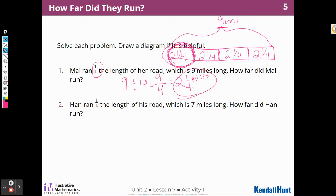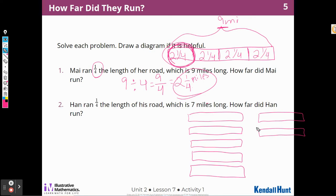Now we have another problem to solve. Han ran 1 fourth the length of his road, which is 7 miles long. How far did Han run? Well, I could solve it just the way I did the miles one, but I think I'm going to do it in a different picture this time. This time I'm going to draw 7 miles. 1 mile, 2, 3, 4, 5, 6, 7.